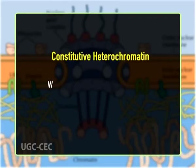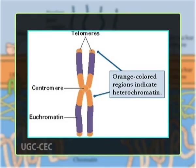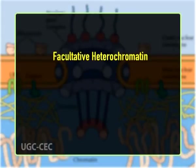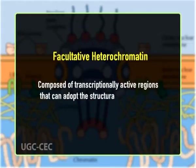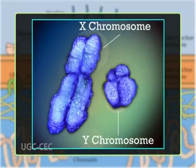Heterochromatin is further of two types: constitutive and facultative. Constitutive heterochromatin is present in all cells and at all stages of the life cycle; it contains few genes and is formed principally of repetitive sequences located in large regions coincident with centromeres and telomeres. Facultative heterochromatin is composed of transcriptionally active regions that can adopt the structural and functional characteristics of heterochromatin, such as the inactive X chromosome of mammals.